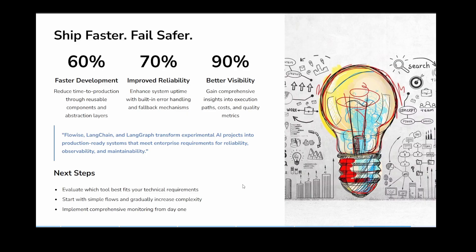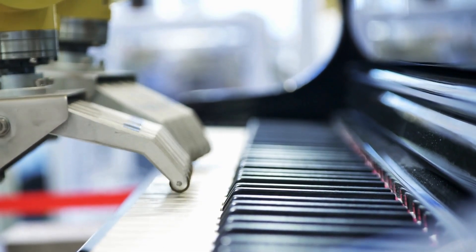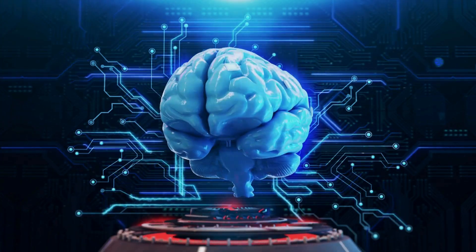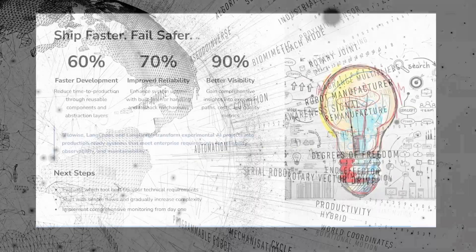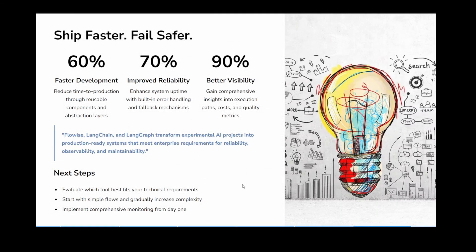Here's the thing that management loves the most and why everybody's moving to AI — not just because of the speed by which you can develop an application, but also faster development, improved reliability, system uptime, built-in error handling, as well as better visibility because you can instantly see what's going on. When you evaluate which tool best fits your technical requirements, start with simple flows and gradually increase the complexity. That's important as we're all learning AI. And implement comprehensive monitoring from day one — don't wait until it's finished, because then when you run into a problem, you don't know where the problem is happening.